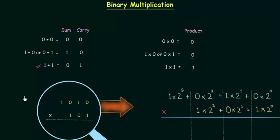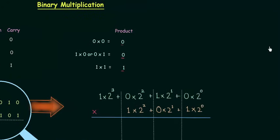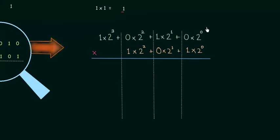Let's move to an example. The first binary number is 1010 and the second binary number is 101. I will magnify this multiplication by including the weights of position. The first column has weight 2 raised to power 0, the second column 2 raised to power 1, the third column 2 raised to power 2, and the fourth column 2 raised to power 3. Now we will move to multiplication.